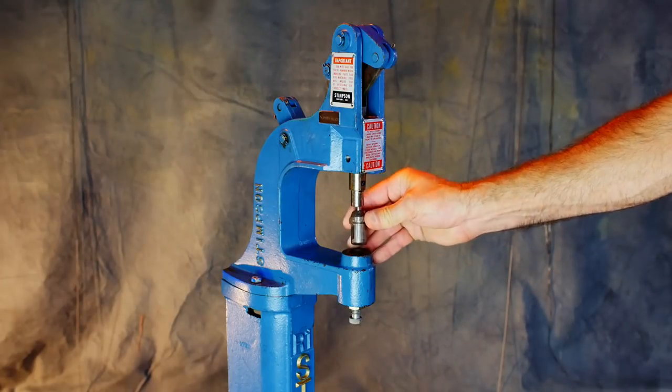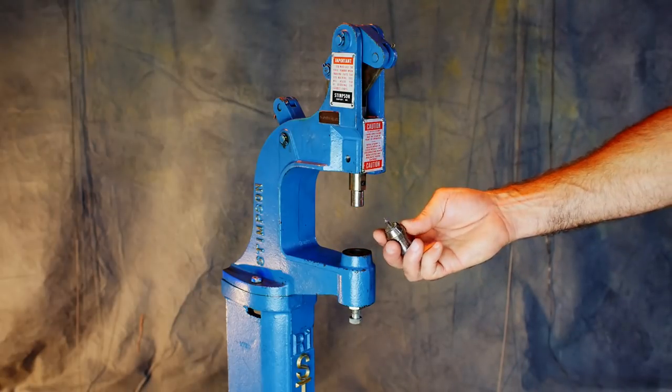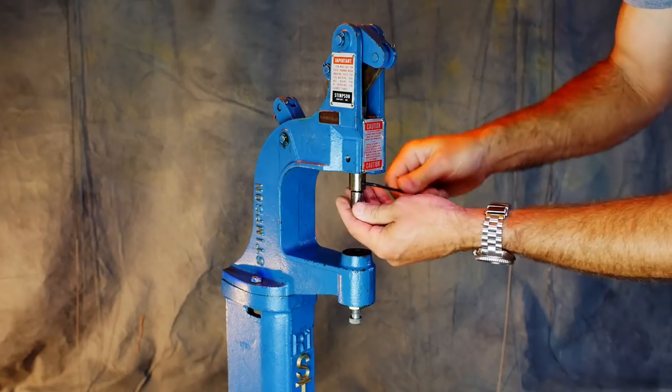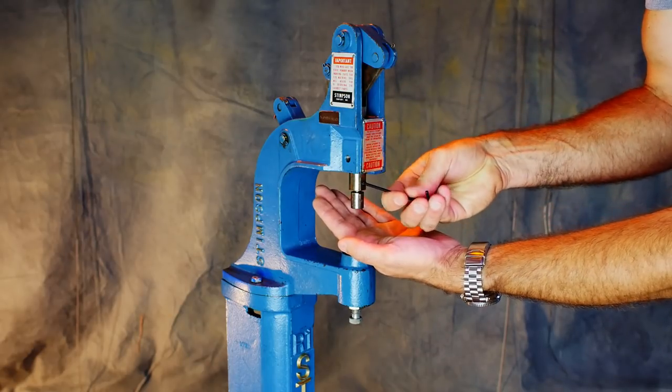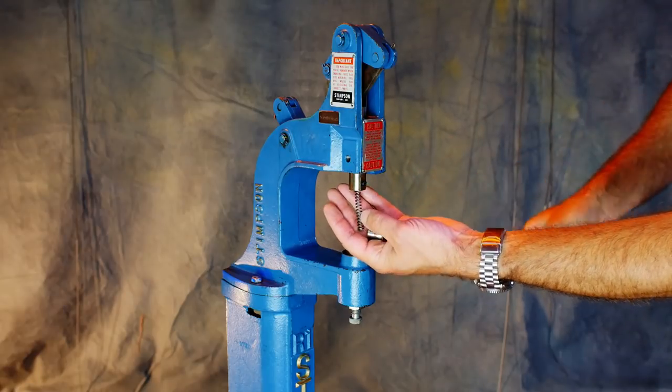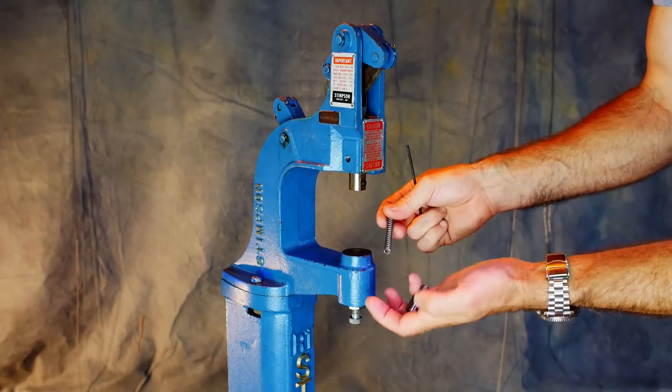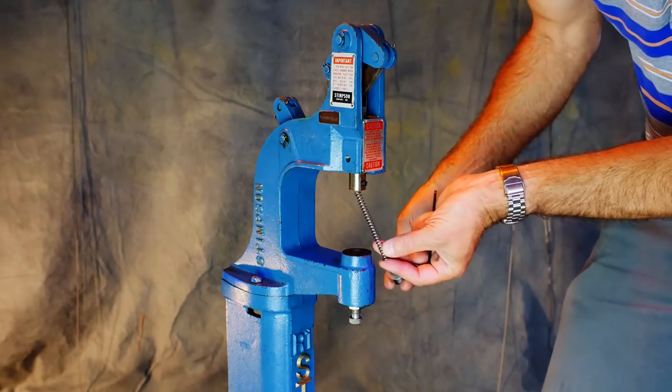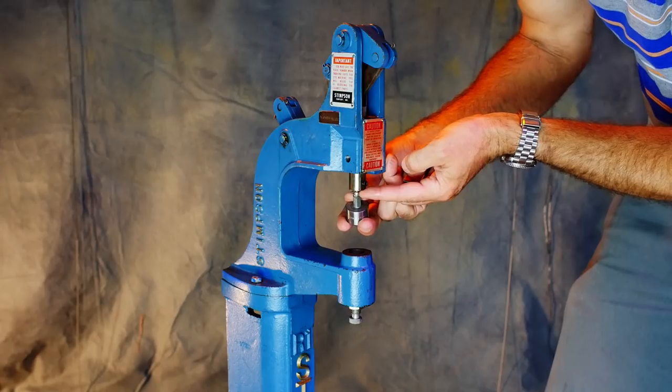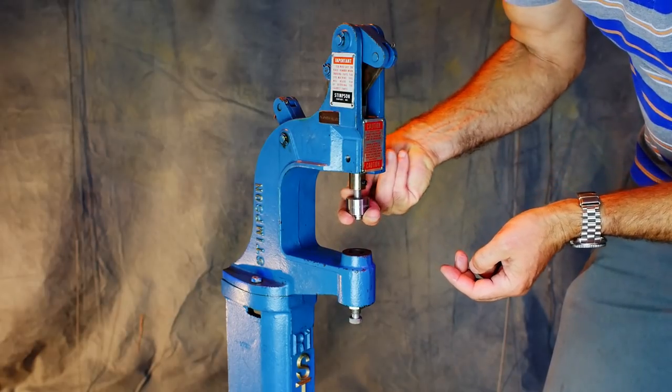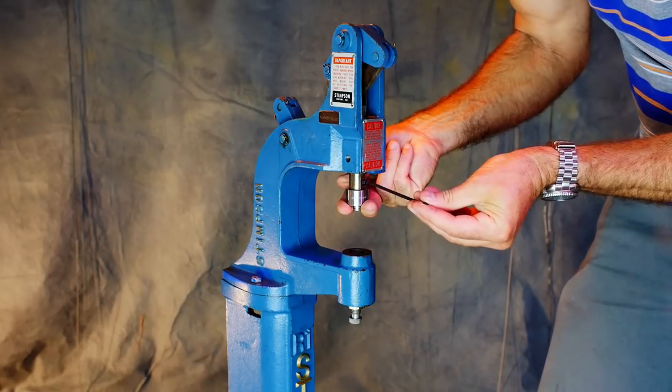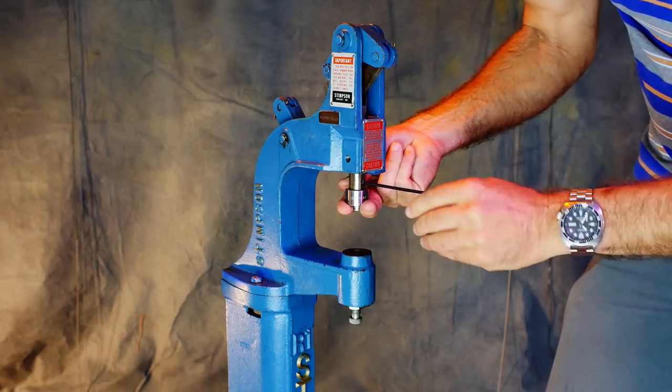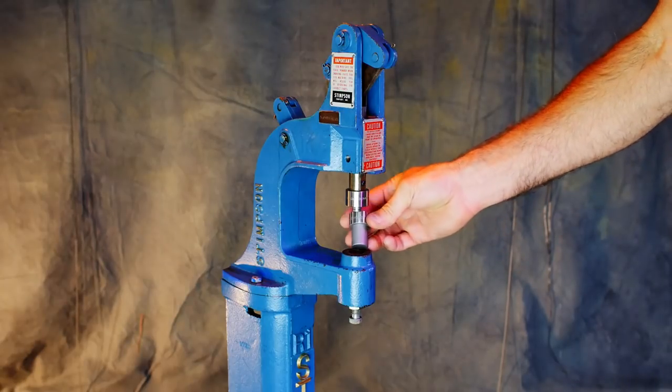Changing out the dies is very straightforward. If you can't find a foot press like this, they do still make hand presses. You can get the same dies for a hand press.